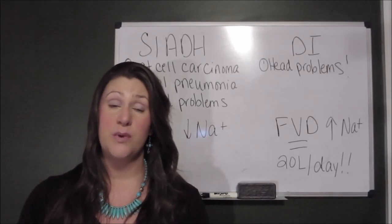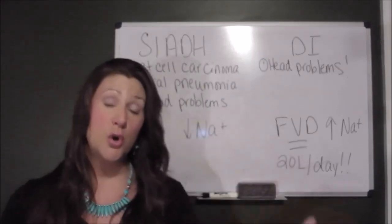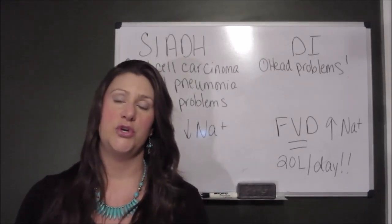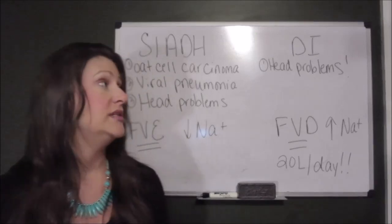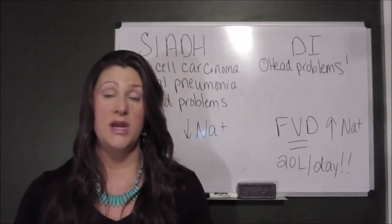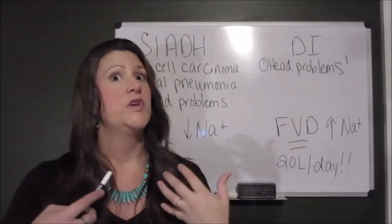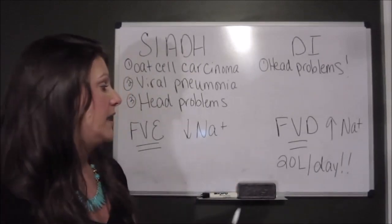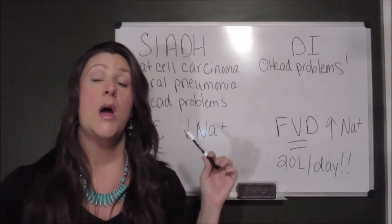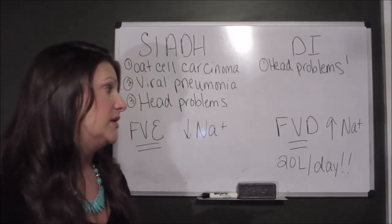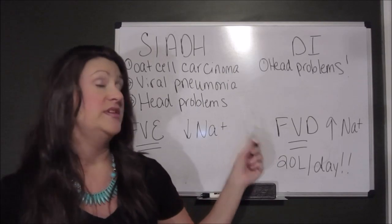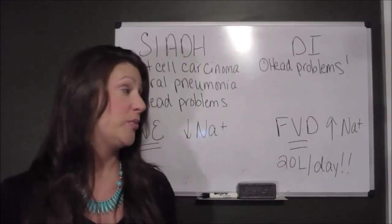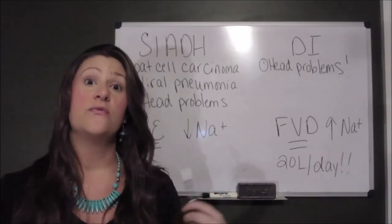For testing purposes, most often you are going to be tested over the neurogenic form, where the posterior pituitary itself is not able to produce ADH. So what happens if you don't have enough anti-diuretic hormone telling the kidneys to hold on to water? The kidneys are going to let go of water — and a lot of it — up to 20 liters per day of fluid loss. You will definitely see a fluid volume deficit and a state of hemoconcentration, so that sodium level is going to be falsely elevated.